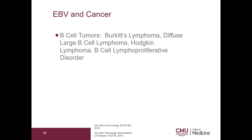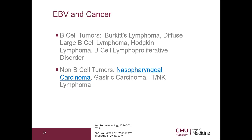Epstein-Barr virus is most famous for causing B-cell tumors including Burkitt's lymphoma, diffuse large B-cell lymphoma, Hodgkin lymphoma, and B-cell lymphoproliferative disorder — all highly complex mechanisms. In addition, you can also get non-B-cell tumors including nasopharyngeal carcinoma, gastric carcinoma, and T or NK lymphoma.